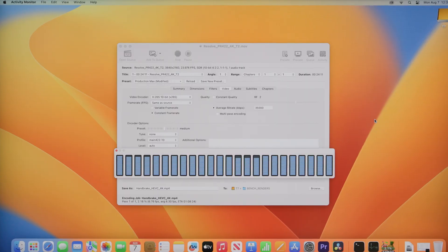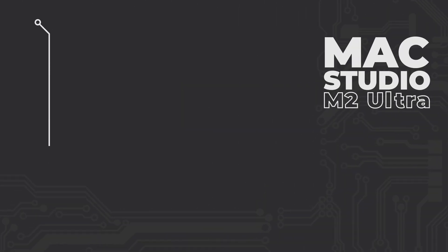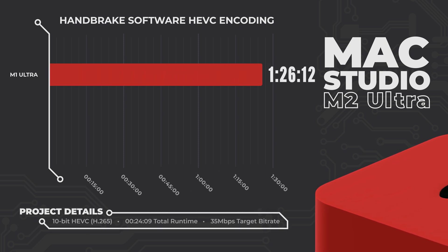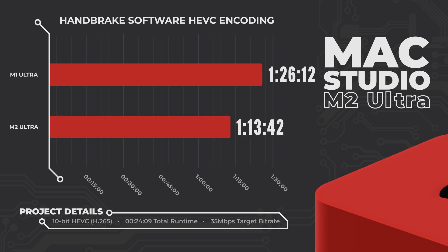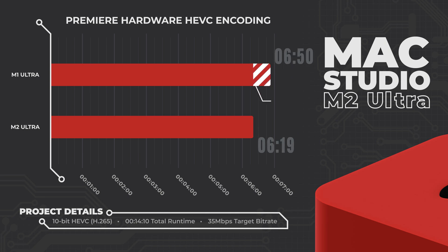When we reviewed the M1 Ultra, I tested Handbrake not only for its extensive codec options, but mainly because its software encoders are an excellent stress test for the CPU side. This time I'm sticking just with the software side, using the X265 software encoder on the medium preset, set to 35 megabits. The M1 Ultra finished encoding to 10-bit HEVC in 1 hour 26 minutes 12 seconds. The M2 Ultra finished the same video in 1 hour 19 minutes 52 seconds, representing a speedup of about 7.35%. This closely matches the 7.56% difference seen in the Premiere Pro HEVC export.